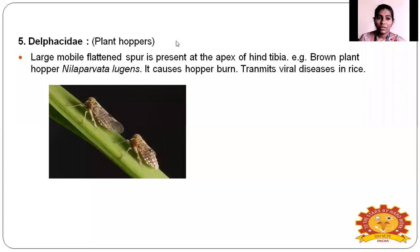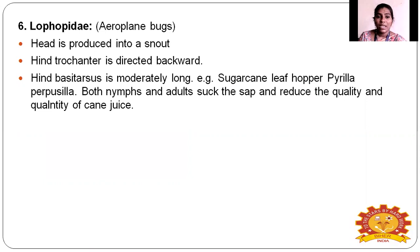Delphacidae — the plant hoppers. A large, mobile, flattened spur is present at the apex of the hind tibia. Example: brown plant hopper, Nilaparvata lugens. Lophopidae — the aeroplane bug. The head is produced in a snout shape and the hind profemur is directed backward. The basitarsus is moderately long.